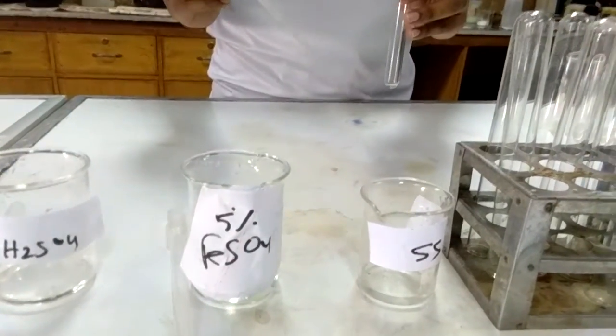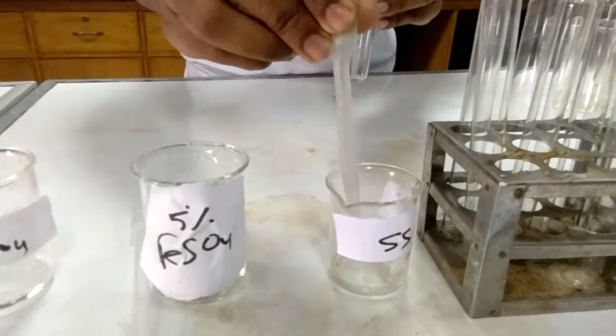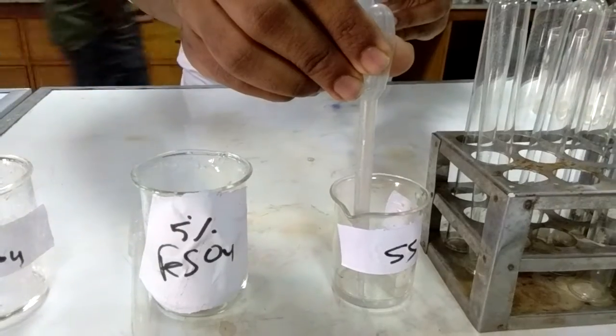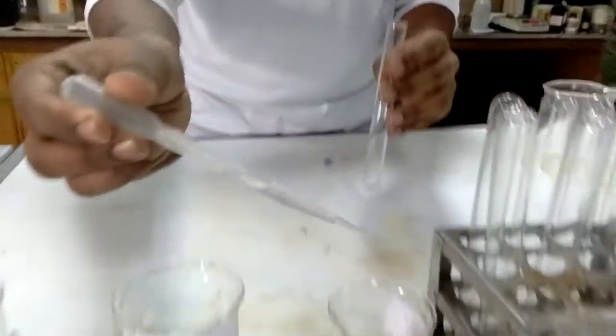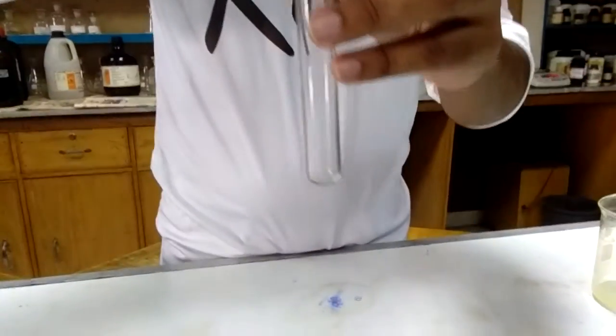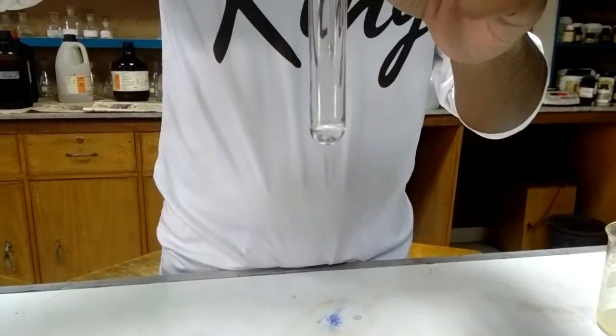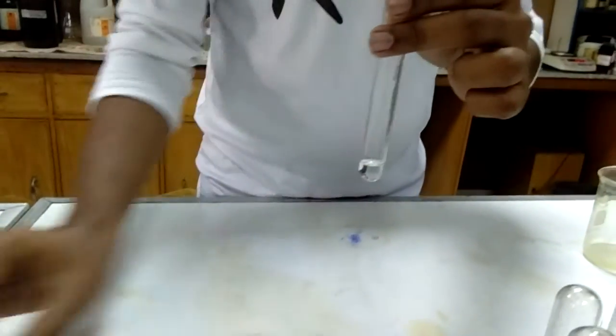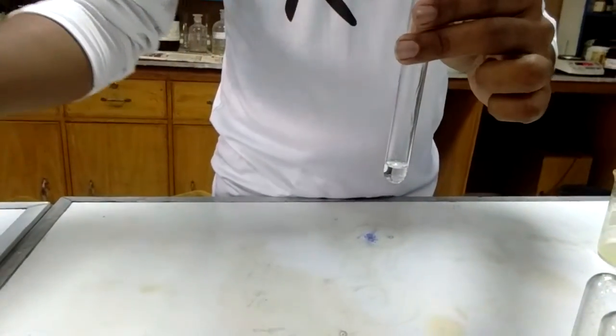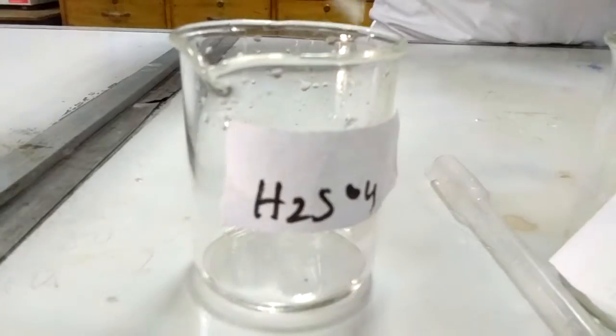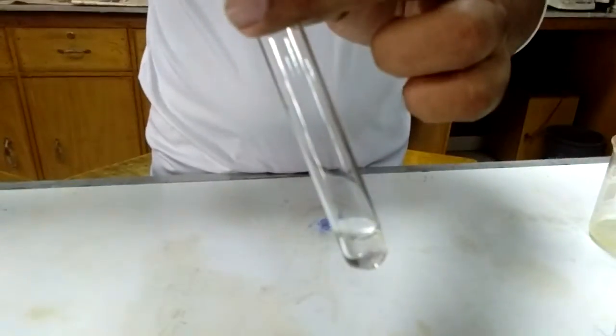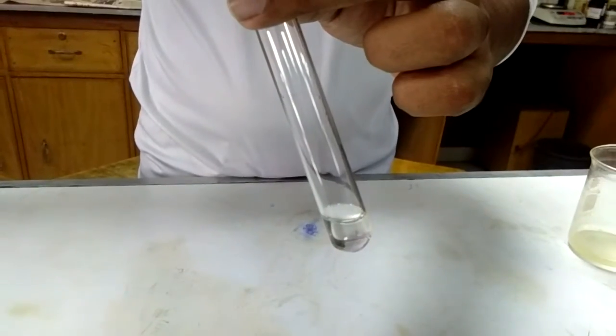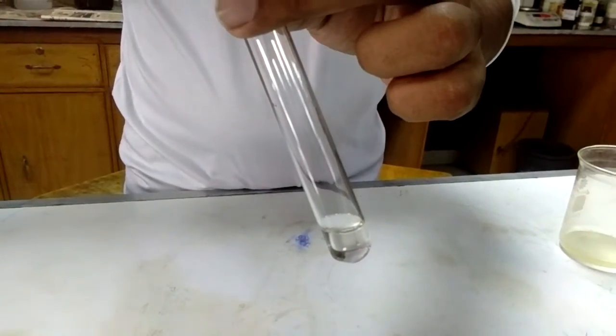This is the ring test for nitrate ion. At first, 2 ml of the sample solution is taken in the test tube. Then, inside this sample solution, in the ratio of 2:1 - that is, for 2 ml sample solution, 1 ml concentrated sulfuric acid is to be added.